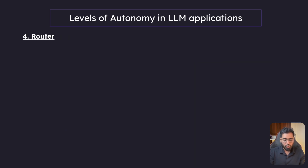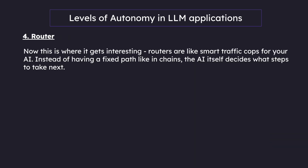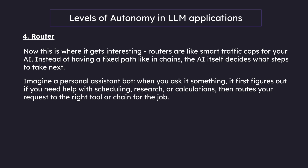Now we come to the router — this is where it gets really interesting. Routers are like smart traffic cops for your AI. Instead of having a fixed path like in chains, the AI itself decides what steps to take next. Imagine a personal assistant bot: when you ask it something, it first figures out if you need help with scheduling, research, or calculations, and then routes your request to the right tool or chain for the job.